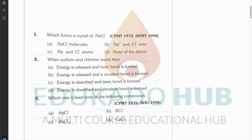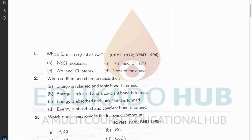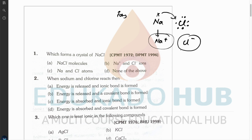The options are: (a) NaCl molecule, (b) ions, (c) atoms, (d) none of the above. You already know that electrovalent bonds are formed between ions. For example, in NaCl there is one excess electron in sodium and seven electrons in the outermost shell of chlorine. One electron gets transferred, making Na⁺ and Cl⁻. Due to electrostatic force of attraction, opposite charges attract, giving rise to the electrovalent bond. So option B is correct.